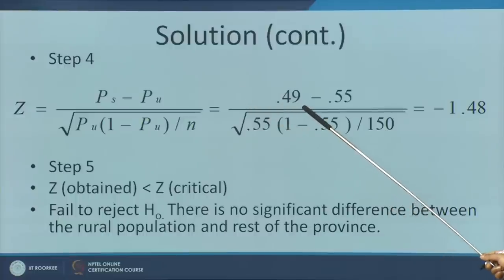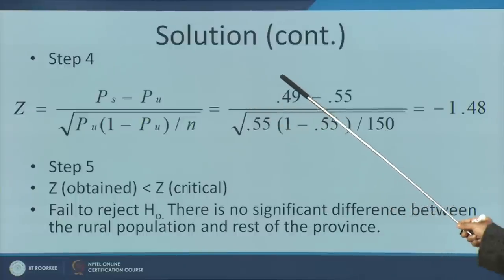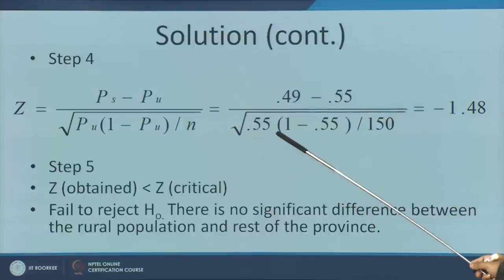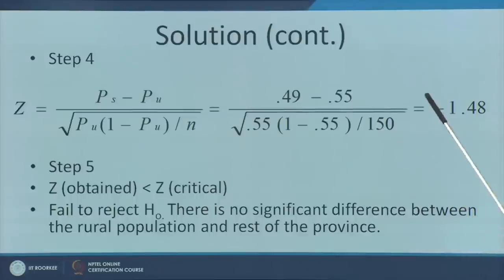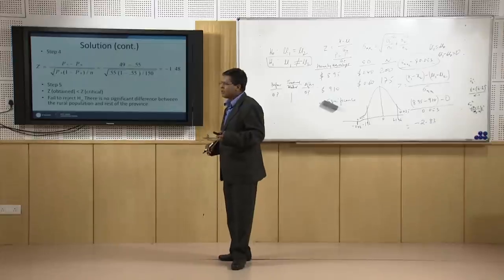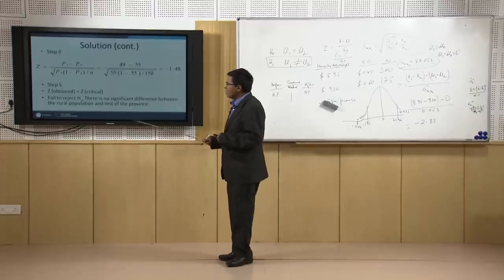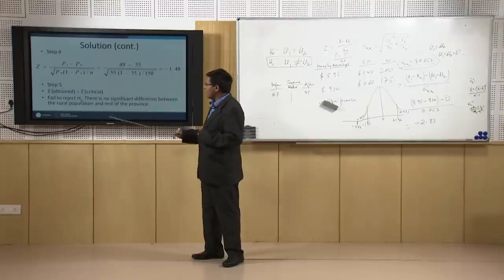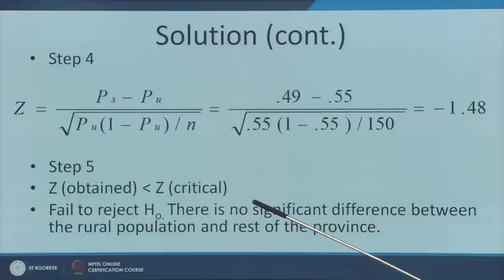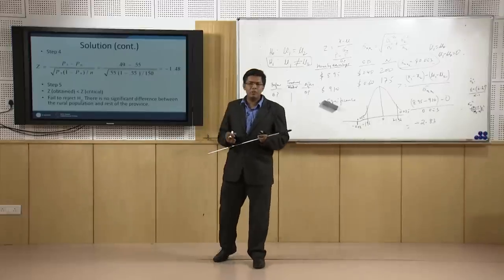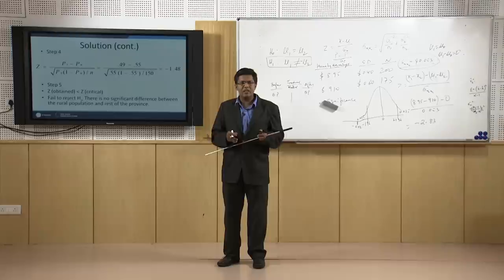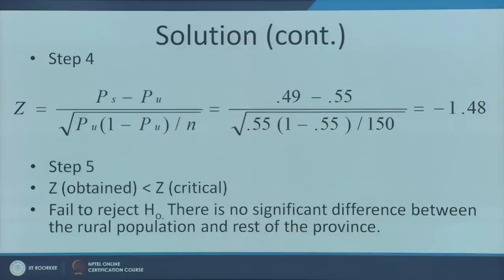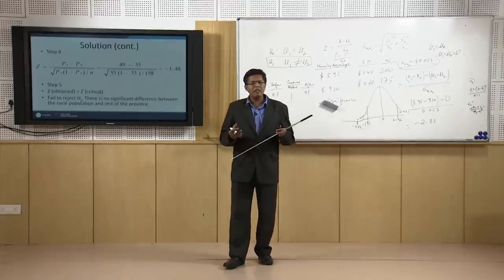Calculating using P_s = 0.49 and P_u = 0.55, we get a Z value of –1.48. Comparing against the 95% confidence level critical value of 1.96, we cannot reject the null hypothesis — we have failed to reject it. There is no significant difference between the rural population and the rest of the province; you cannot claim a difference between the two populations.